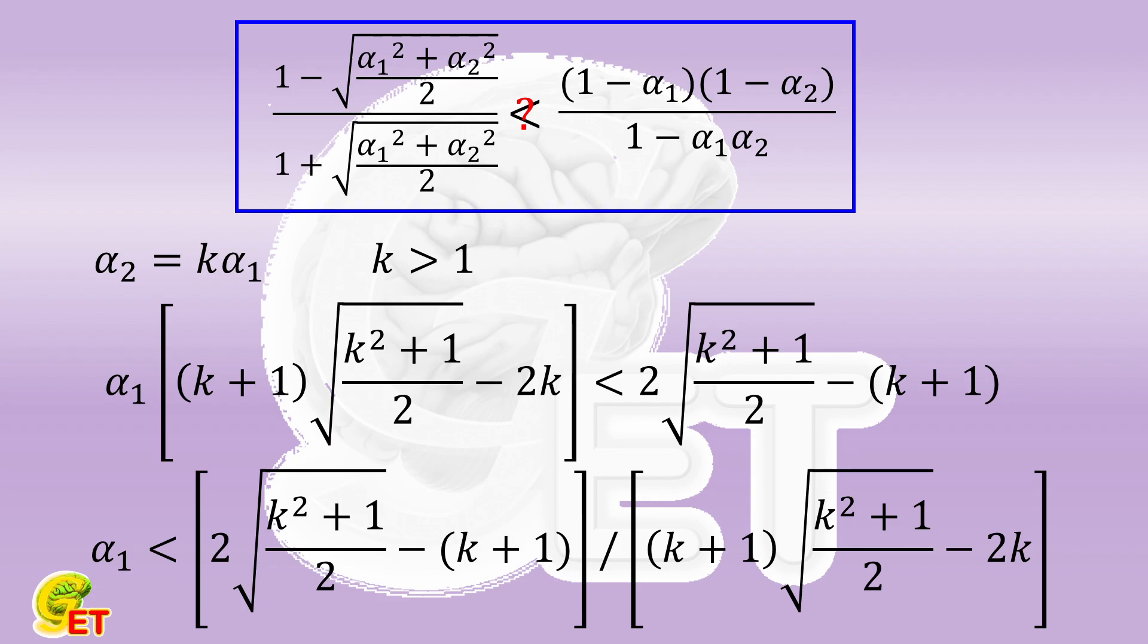Then we have therefore proved that this opposite inequality must have solutions. That is, the original inequality with quadratic mean is not correct.